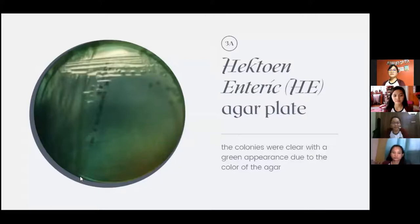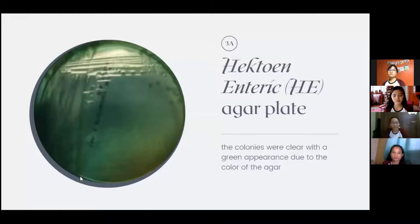The Hektoen enteric agar plate is used to differentiate Salmonella from Shigella. The presence of blue-green colonies with black centers indicates Salmonella, and colorless colonies indicates Shigella.